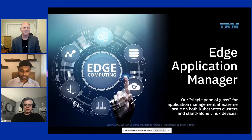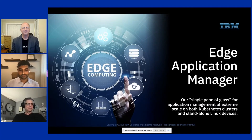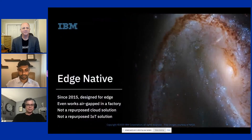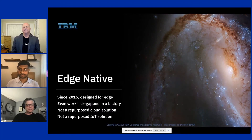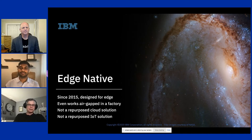Can you see the Edge Application Manager screen? IBM's Edge Application Manager is our single pane of glass for application management at scale on both Kubernetes clusters and standalone Linux devices. It is an edge-native platform — it even works completely air-gapped from the internet in a factory if you want. Unlike some competitors' solutions, this is not a repurposed cloud solution and not a repurposed IoT solution; we designed it from the ground up as an edge platform.